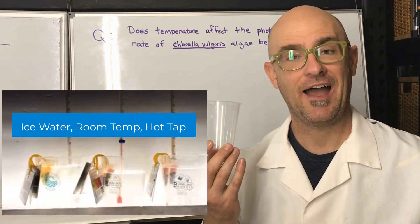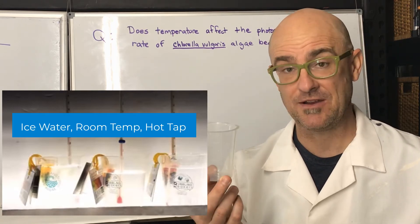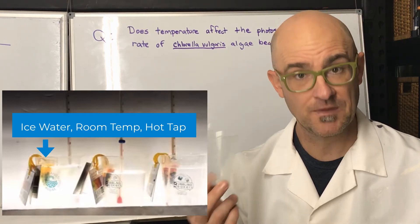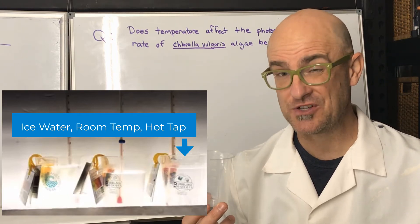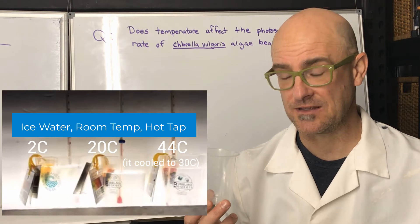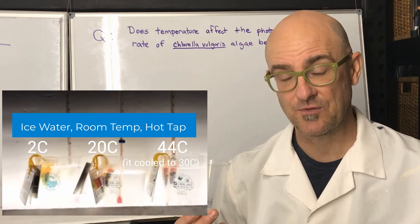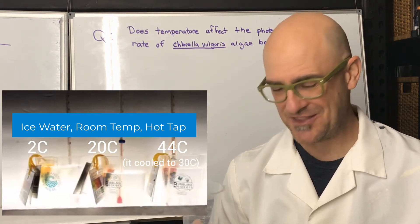I grabbed three small beakers and filled one of them with ice water, room temperature water, and hot tap water. The hot tap water turned out to be about 44 degrees Celsius, 20 degrees Celsius for room temperature, and about 2 degrees Celsius for the ice water.